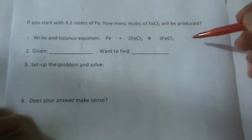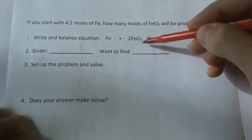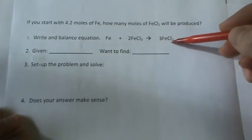We have a balanced equation. We know that 1 mole of Fe plus 2 moles of FeCl3 gives us 3 moles of FeCl2.